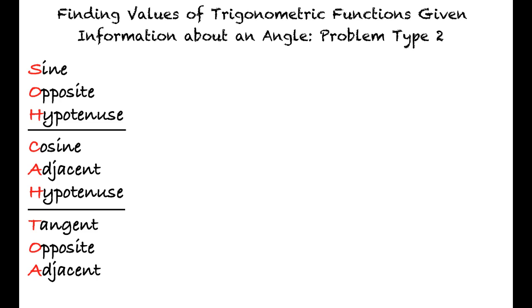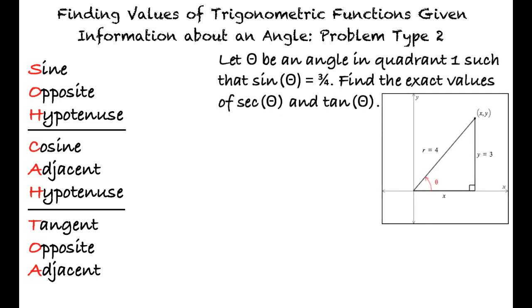Let's look at an example. Let theta be an angle in quadrant 1 such that sine of theta equals three-fourths. Find the exact values of secant of theta and tangent of theta.